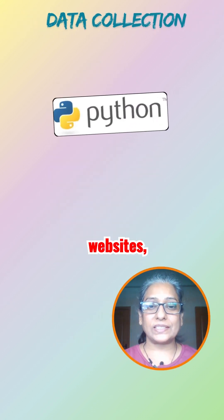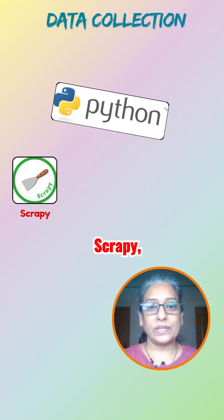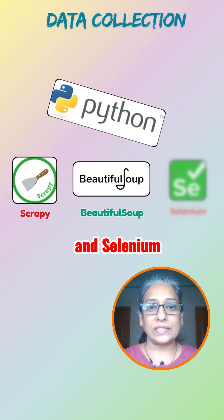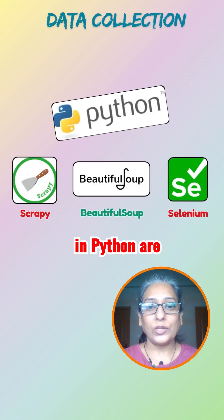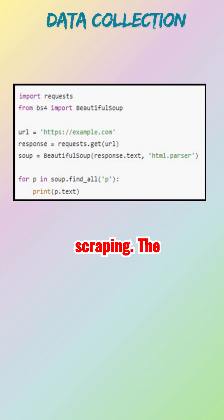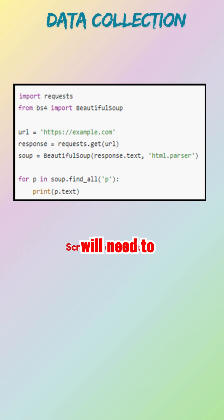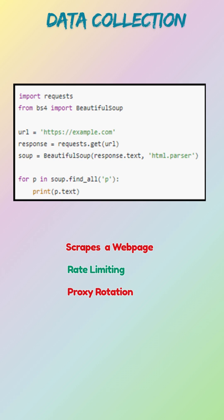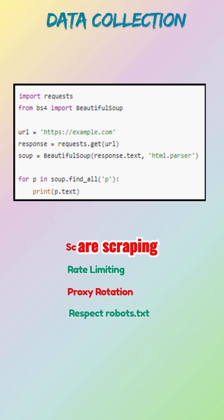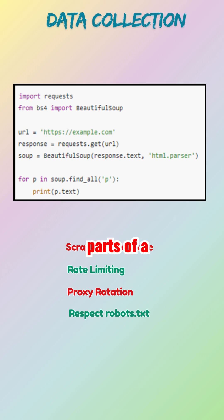For public websites, tools like Scrapy, BeautifulSoup, and Selenium in Python are used for web scraping. The code snippet you see here scrapes paragraph content from a web page. It's a simple example, but in real-world scenarios you will need to handle things like rate limiting, proxy rotation, and respect for robots.txt to make sure you're scraping only the permitted parts of a website.